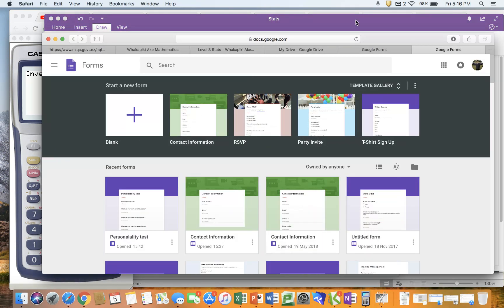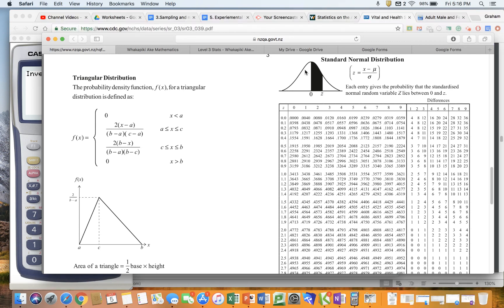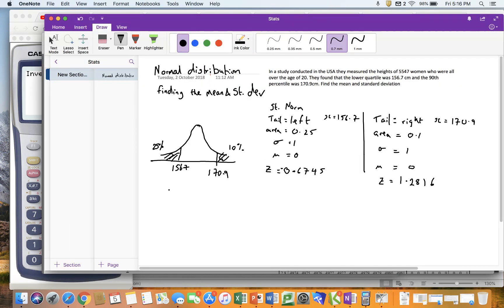Remember when we were working with our normal distribution, we had this value. If I think about that formula, Z equals X minus mu over sigma, I can rearrange that. So I'm going to multiply both sides by sigma, so I'm going to get Z sigma equals X minus mu, so Z sigma plus mu equals X.